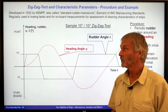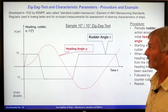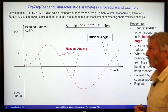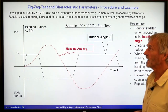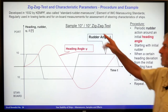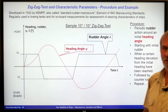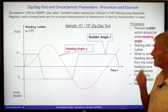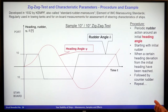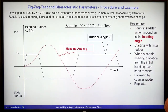Starting with the standard procedure. It is already old — it was developed in 1932 by Kempf. It's also called the standard rudder maneuver because it was used heavily, and is even now being used, in towing tanks and also in on-board measurements. It's a test maneuver for the assessment of steering characteristics of ships.